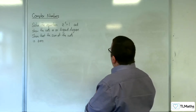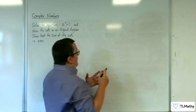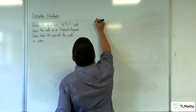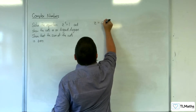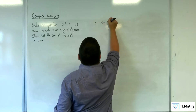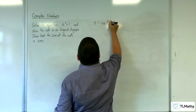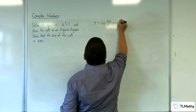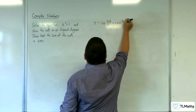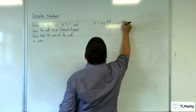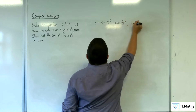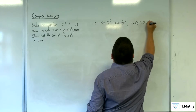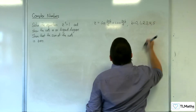We know from the nth roots of unity that z must be of the form cosine of 2 pi k over n, which in this case is 6, plus i sine 2 pi k over 6, where k is equal to 0, 1, 2, 3, 4, and 5.